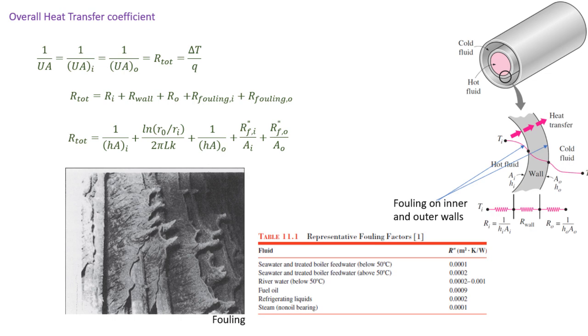Keep in mind that although you can find representative fouling factors, they will vary depending not only on the operating temperature and the fluid velocity, but with how long the unit has been in service. A new heat exchanger has a fouling factor of zero. As time increases, that fouling factor increases.